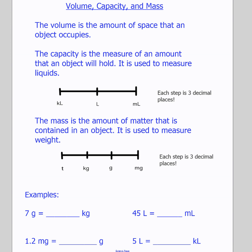This video is on converting between volume, capacity, and mass. We've been doing some work with 3D shapes and coming up with the volume, getting units like centimeters cubed, millimeters cubed, or meters cubed. Volume is the amount of space that an object can hold — like how much water, sand, or air. Depending on what you're filling it with, the unit could change. For example, a bottle of water is measured in milliliters or liters, not centimeters cubed.